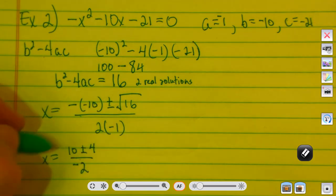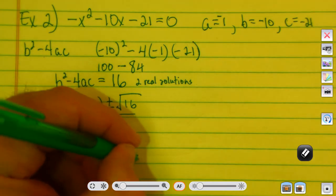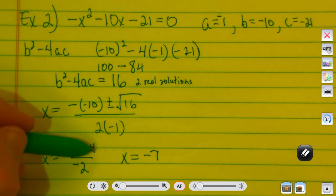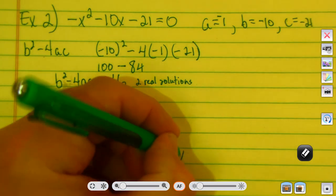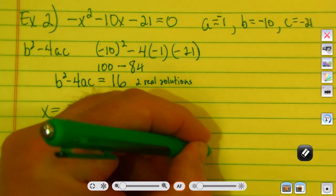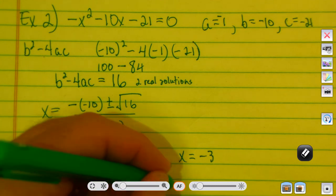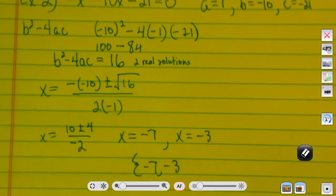So, we've got a couple of answers. 10 plus 4, which is 14, divided by negative 2, which will be negative 7. And 10 minus 4, which will be 6, divided by negative 2, which will be negative 3. So, my solutions are negative 7 and negative 3.